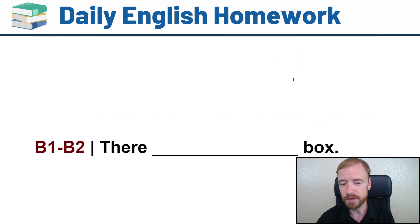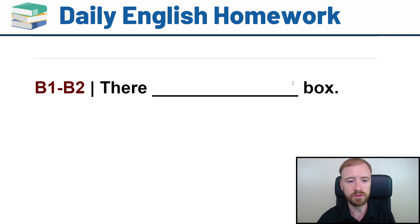Let's go to the next one. This is B1, B2 level. This is a little bit middle level. Again, I'm going to give you the first word and the last word and listen carefully. Here's the first time I say it. There must be something in the box. And listen to the second time. There must be something in the box.